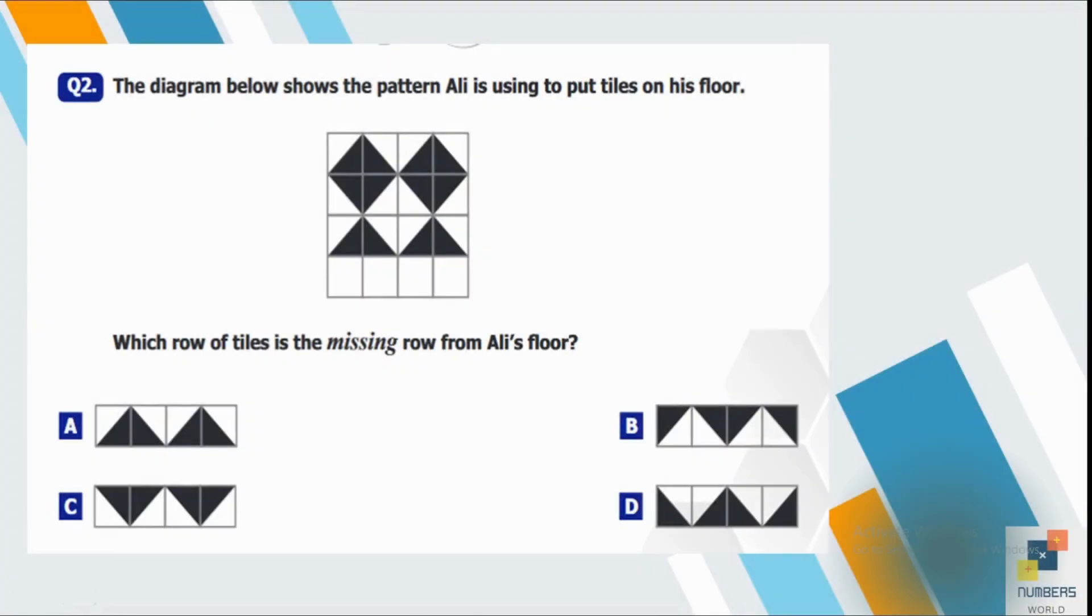Question number 2. The diagram below shows the pattern Ali is using to put tiles on his floor. Which row of tile is the missing row from Ali's floor? So you can clearly see there are some triangles upwards and downwards upwards. So obviously group part C is our correct option to complete the pattern.